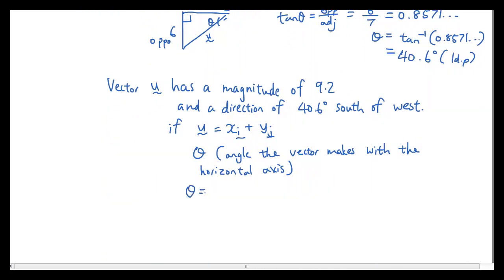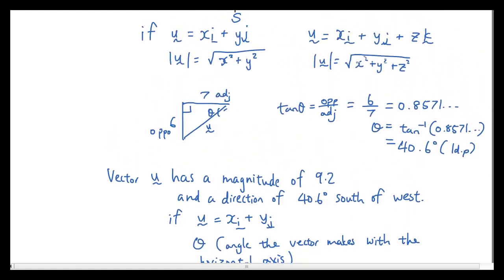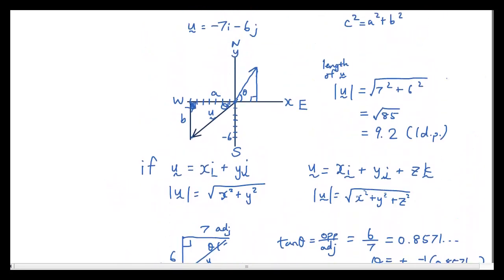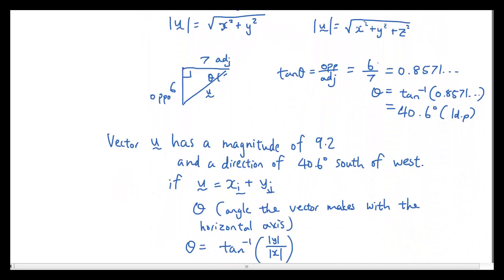Theta is equal to inverse tan bracket the absolute value of y over the absolute value of x. So you can see here we had negative 6, negative 7 and negative 6, but when I put it into this tangent equation, I just have positive numbers.